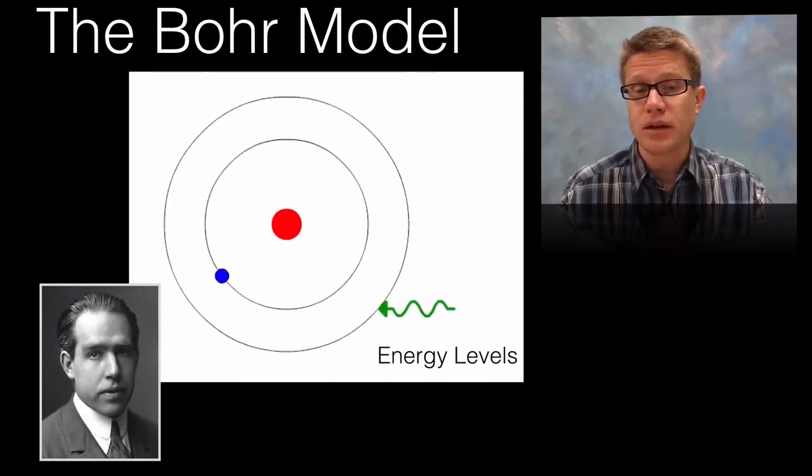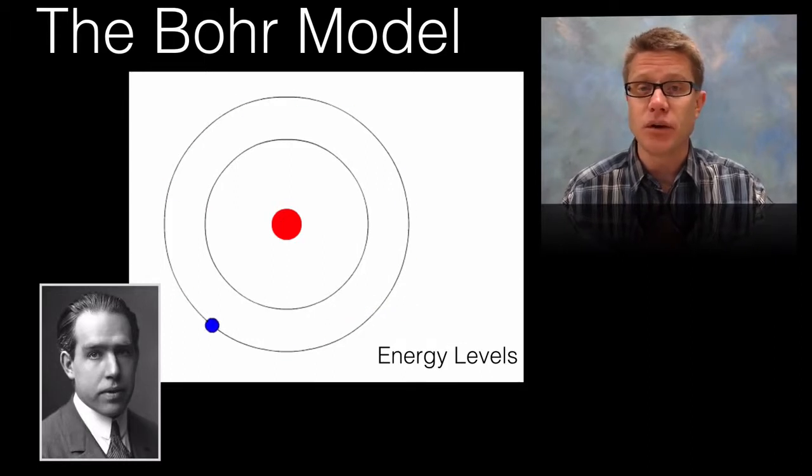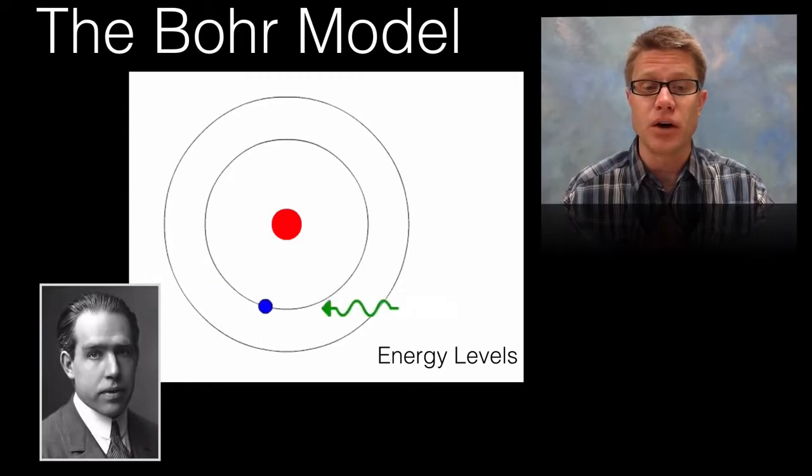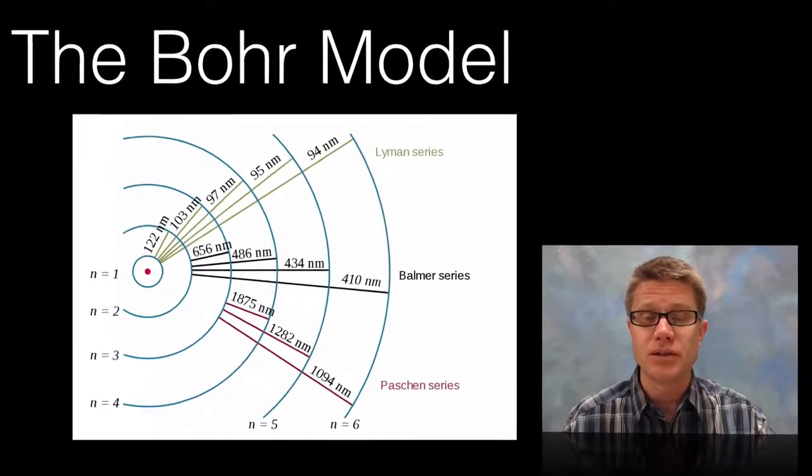And so as it orbits around the center, if it receives a photon it jumps to a higher level. If it gives off an equal photon it will drop down to a lower level. And so it is only existing in these quantized orbits.